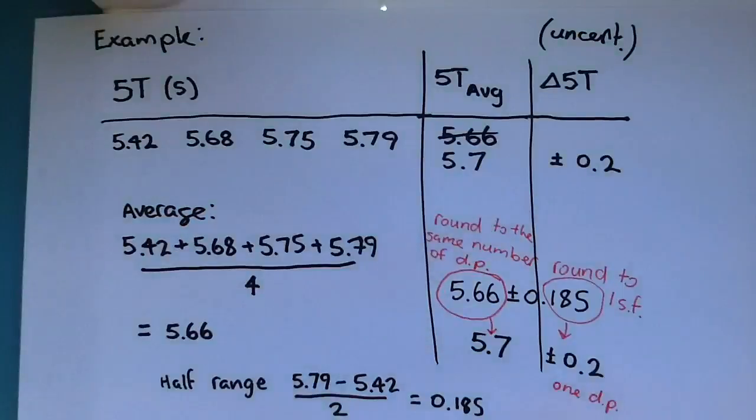We find the range in our times by subtracting the lowest time value from the highest value. Then we divide this range by 2 to get the uncertainty.